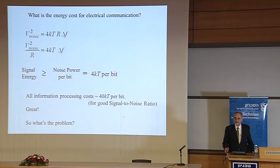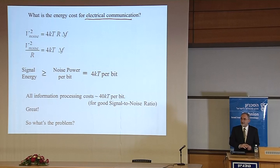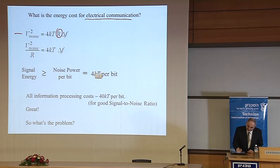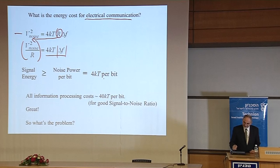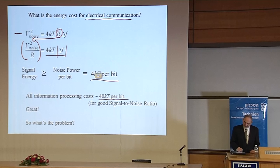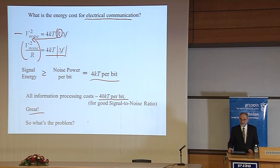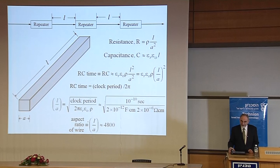Why should that be a problem? What is the energy cost for electrical communication? Asking this is similar to asking about the energy cost of reading out flash memory. Working through Johnson noise, normalizing per bit, it comes out to 4 kT per bit, or with signal-to-noise ratio, 40 kT per bit. That's a million times less power than we're using today. So why is there any difficulty whatsoever?